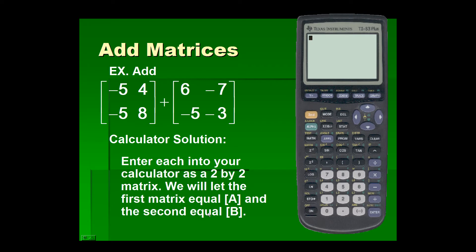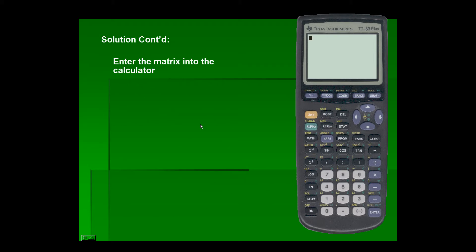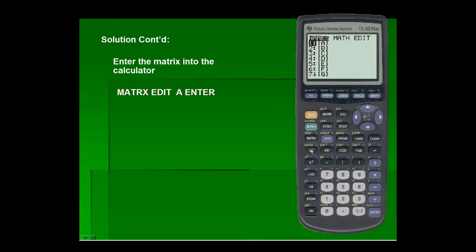Let's take a look at the calculator solution. We'll enter each into the calculator as a two by two matrix — the first as matrix A and the second as matrix B. So first, let's enter matrix A. The matrix function is located above the inverse key as a yellow second function. We'll scroll over to edit and select matrix A, which is already highlighted, then press enter.